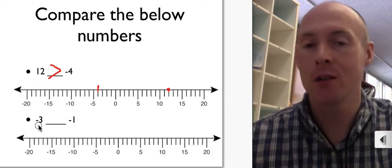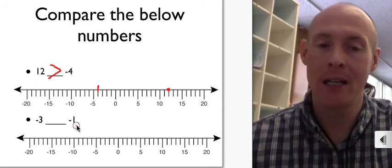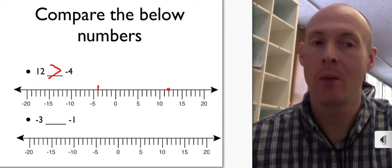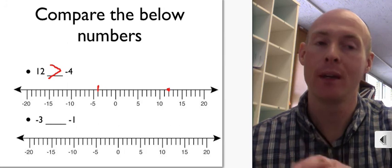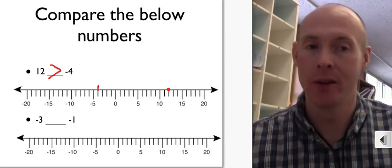Let's look at the next one. The next one is negative 3 and negative 1. Well, what I want you to do is pause the video and plot where negative 3 and negative 1 are on your number line.